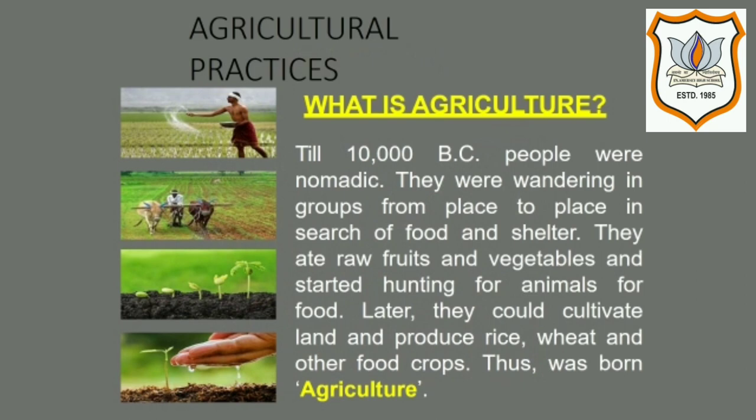The first thing which comes to our mind is: what is Agriculture? Agriculture is the science and art of cultivating certain plants and raising domesticated animals. Agriculture was a key development for human civilization. The history of agriculture goes back 10,000 years.